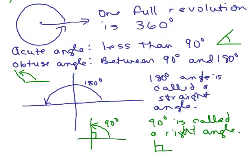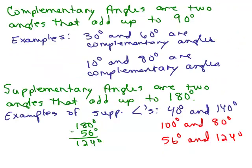We're going to use the definitions of many terms given in Angles Part 1 to solve some problems about angles. In particular, we learned that a full revolution is 360 degrees, an acute angle is less than 90 degrees, an obtuse angle is between 90 and 180 degrees, 180 degrees is called a straight angle, 90 degrees is called a right angle, and we talked about complementary angles — two angles that add up to 90 degrees — and supplementary angles — two angles that add up to 180 degrees.